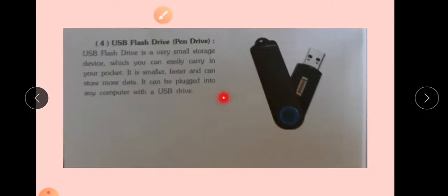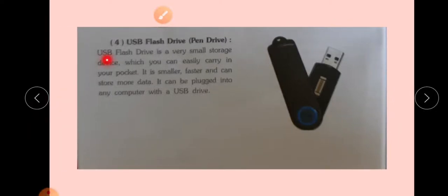Next is USB flash drive, that is pen drive. USB flash drive is a very small storage device which you can easily carry in your pocket. CD pocket में लेके जाएंगे तो टूट जाएगा. लेकिन USB आराम से pocket में हम keychain बना कर भी लेके घूम सकते हैं. It is smaller, faster and can store more data. It can be plugged into any computer with USB drive और USB drive जहां जहां पे रहती है computer के side में वहां पे हम इसको plug कर सकते हैं. Easily removable है और easily usable है और इसकी capacity भी काफी अच्छी है, 2 GB से शुरुआत होती है 32, 64 और 128 GB तक.